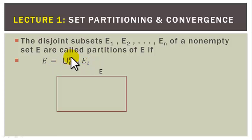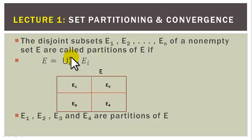For illustration, let this rectangle represent the set E, and let the set E be partitioned as follows. Let this be E1, this be E2, E3 and E4. Clearly you can see that E1, E2, E3 and E4 are pairwise disjoint, and their union is equal to the whole rectangle E. That is, E1, E2, E3 and E4 are partitions of E.